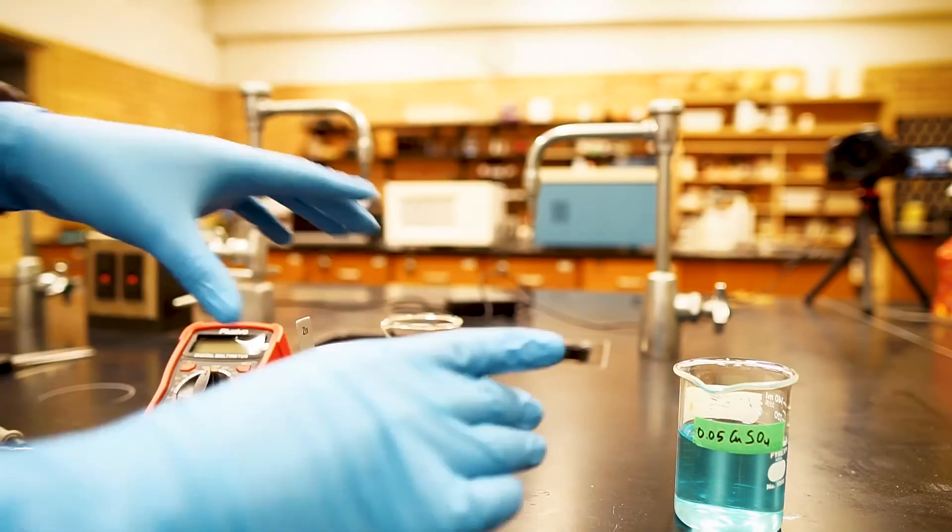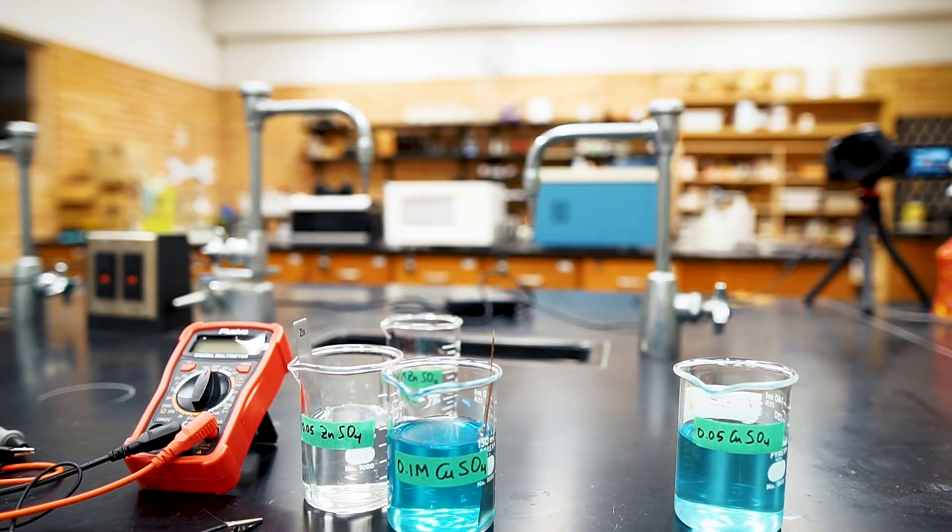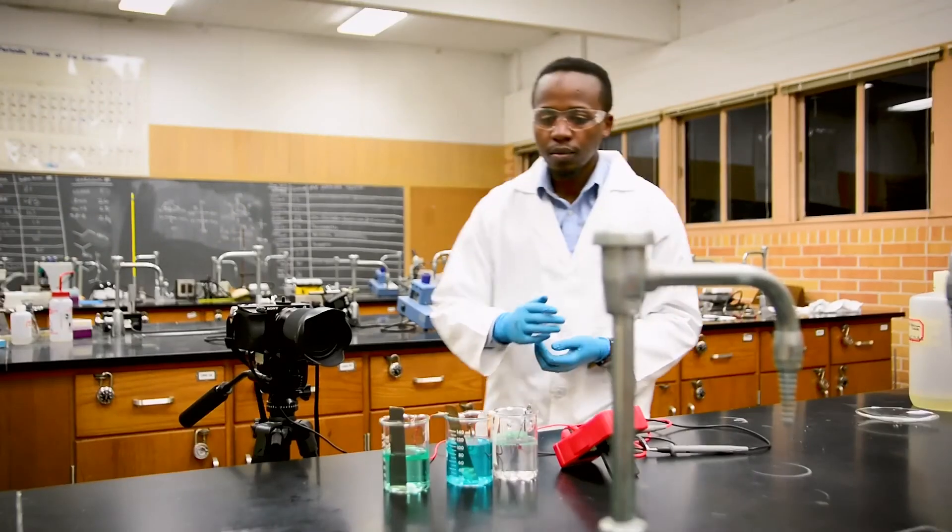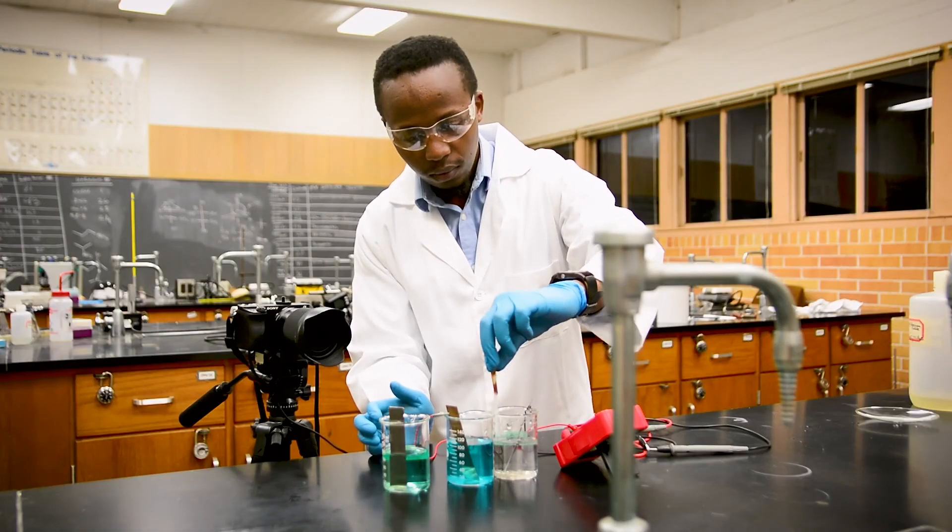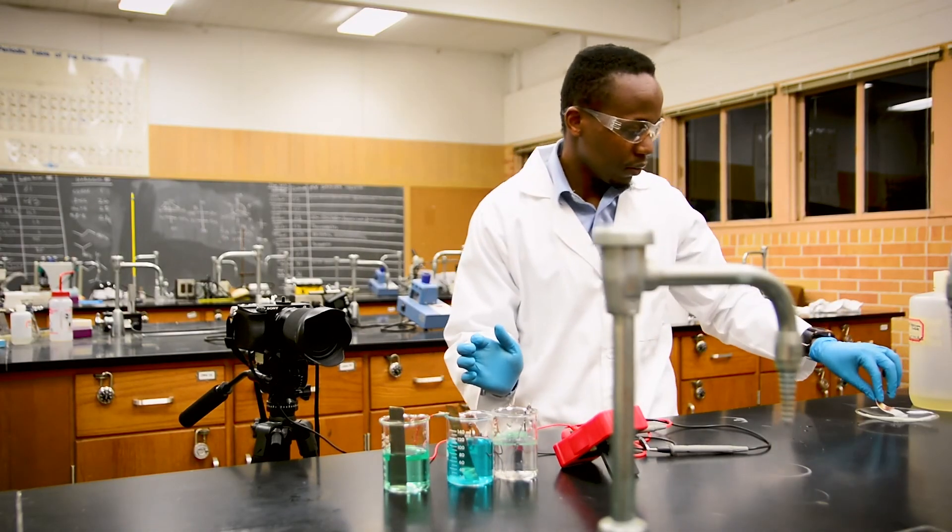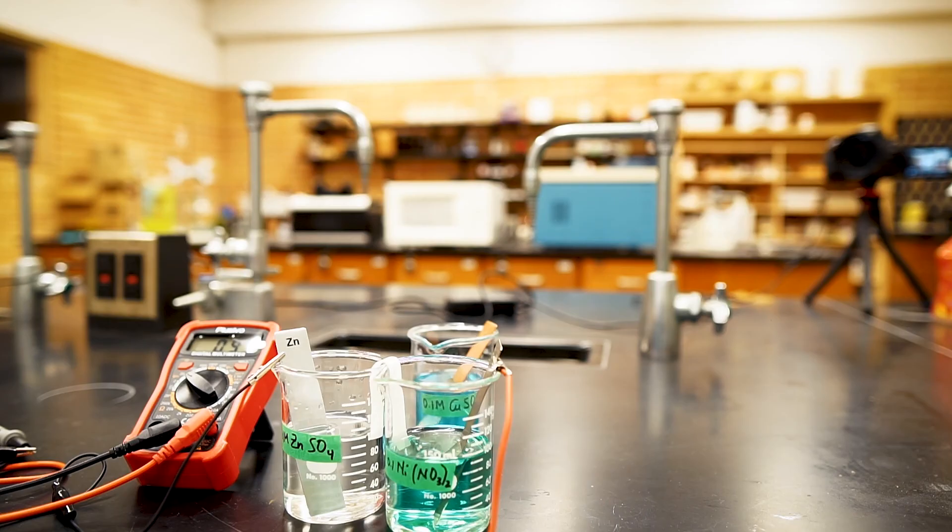However, if we change only one concentration and not the other, the voltage will change. Once we are done with this particular galvanic cell, we can replace one solution and electrode with another solution and electrode, such as nickel in this case. We can then measure the voltage between that half-cell and that of copper, or zinc.